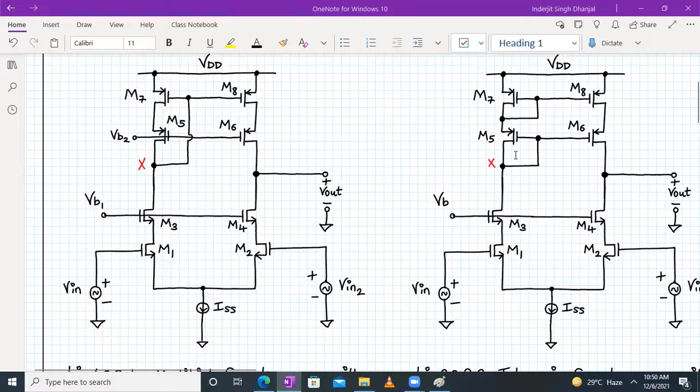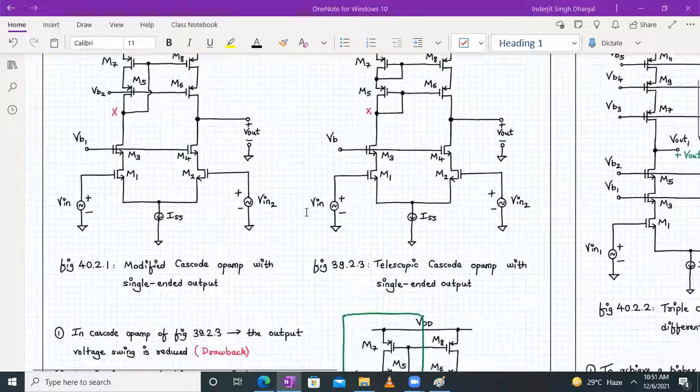It is bypassed and directly connected to the drain terminal of M5 transistor. This was the previous network where M7 and M5 were individually diode-connected. But here, M5 and M6 are biased by an external voltage VB2, and M7 is diode-connected. That is the modification.